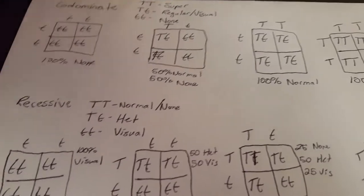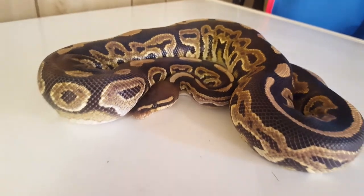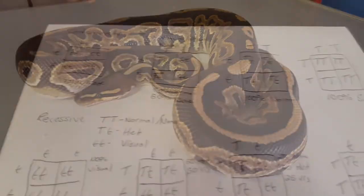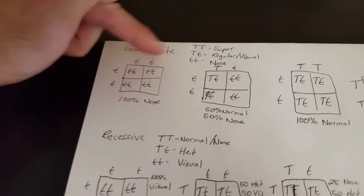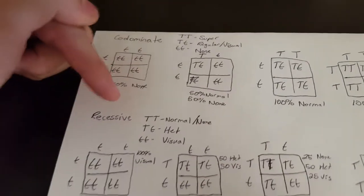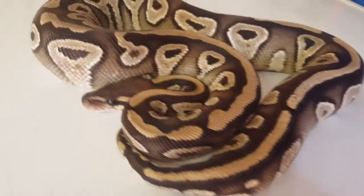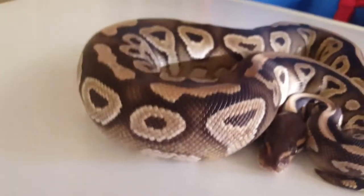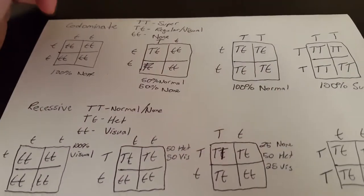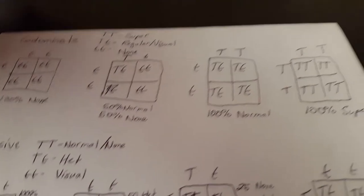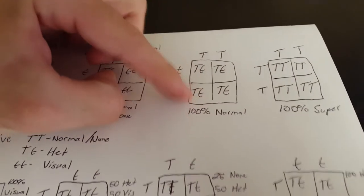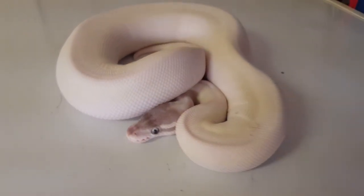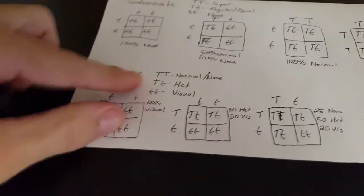The big T little t is a visual, kind of like our Bell pastel, and then the lower lower — two lowercase — is no gene present, which would be like our normals like Pandora or Ma. So if you see here, this shows two normals — all of their offspring will 100% be normals. If you have one visual and one normal, 50% of those offspring are going to be visuals and the rest normals. If you have one super bred to a normal, you're gonna have all just visuals. And if a super is bred to a super, you have 100% chance for super.